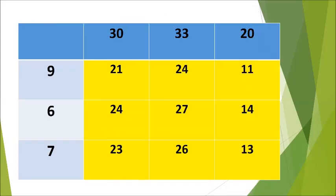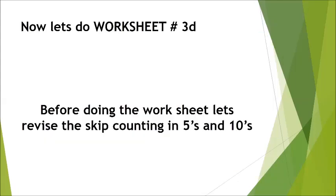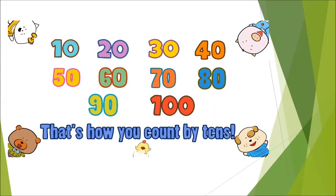Children, this is the filled table that is on worksheet 3C. After completing your worksheet, you can match your answers with this table. Now let's do worksheet number 3D. Before doing the worksheet, let's revise skip counting in 5s and 10s. Now let's revise skip counting by 10s: 10, 20, 30, 40, 50, 60, 70, 80, 90, 100.